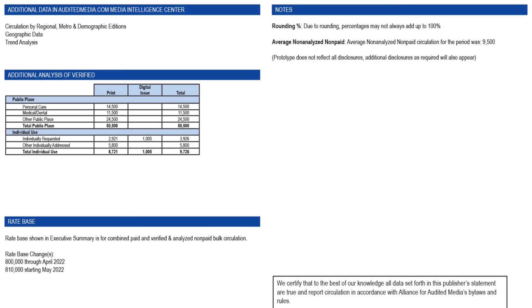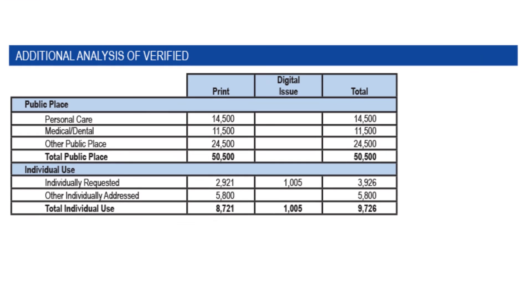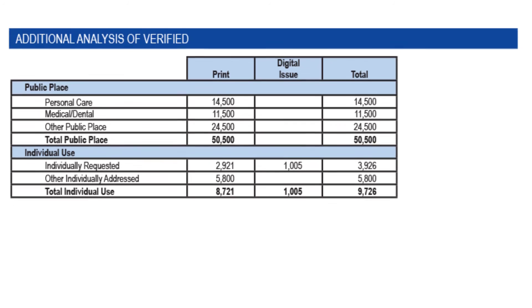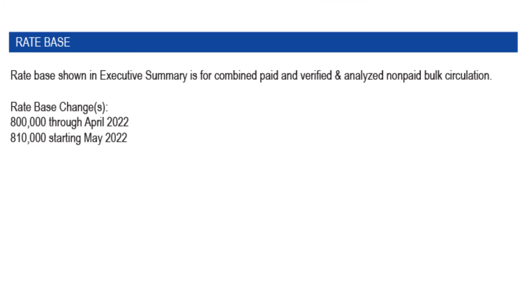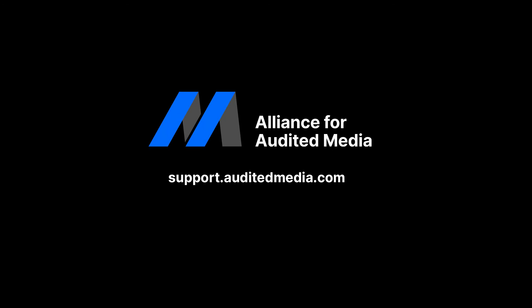The second page in the report includes the notes section where publishers may provide additional disclosures, additional analysis, a verified circulation where you can find information about where verified copies were distributed, and the rate-based summary, which shows any changes made to the rate-based by the publisher during the reporting period.